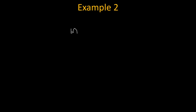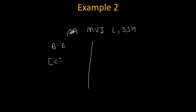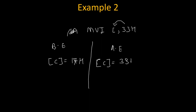Let's take one more example. Suppose the instruction is MVI C, 33H. Before execution, let's say the C register was holding 17H. After execution of MVI C, 33H, this value 33H will get copied inside the C register. So after execution, the C register will hold the value 33H.